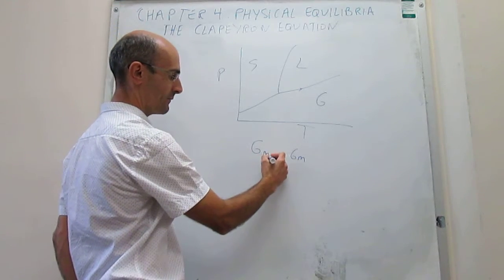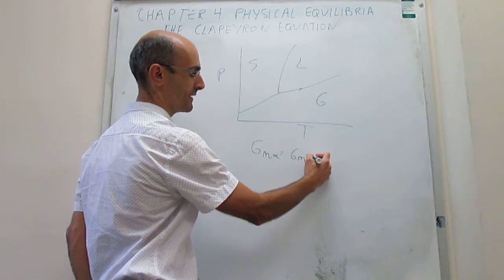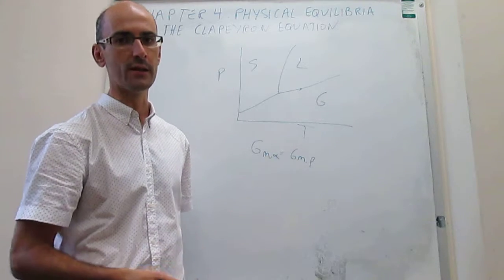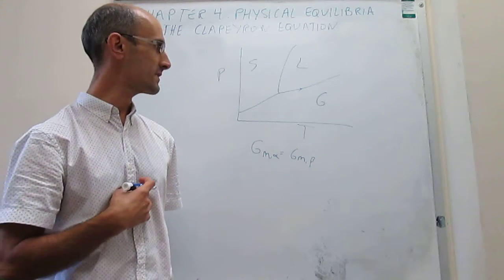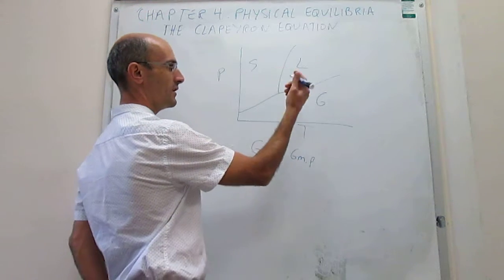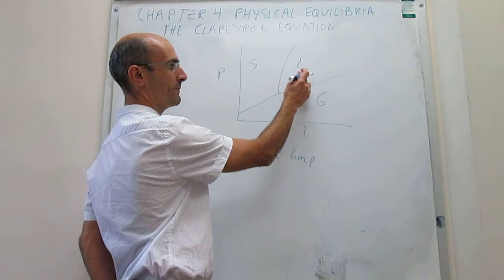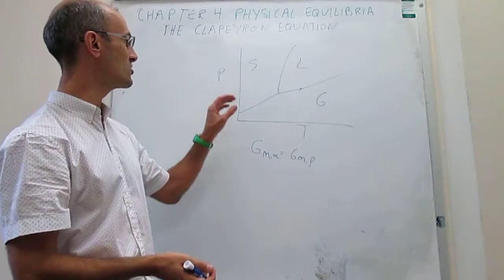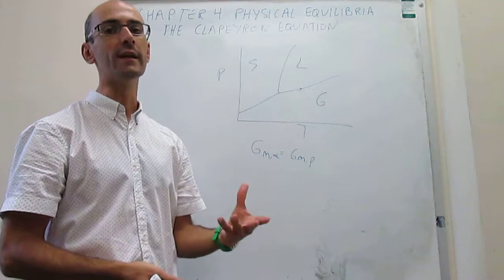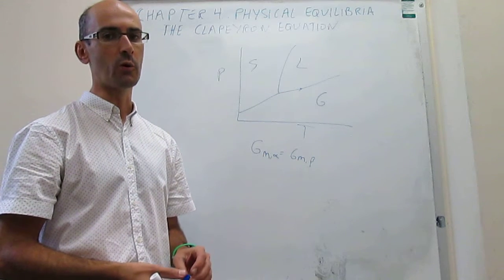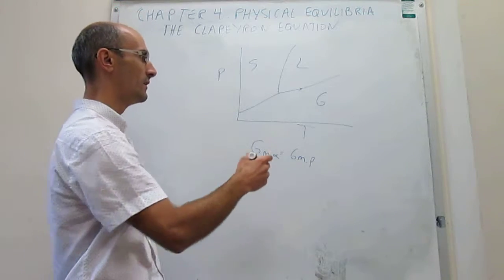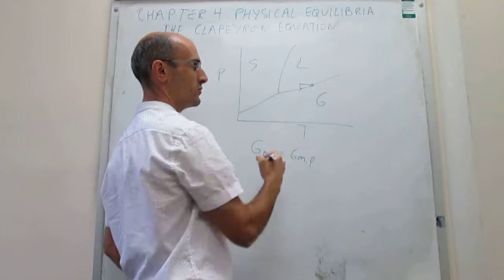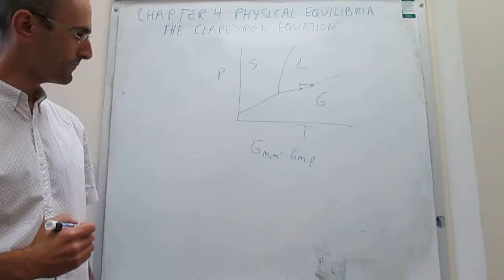I'm going to be doing this as generic alpha and beta phases, where alpha can be the liquid, beta can be the gas, or any combination of phases that you want. The question that we ask is as follows: suppose that you disrupt the equilibrium by maybe increasing the pressure or increasing the temperature — how much would you like to change the other variable to remain at equilibrium? That's essentially what we're going to be trying to ask here. Suppose that you change one variable; the question is how much do you have to change the other to remain on the curve?